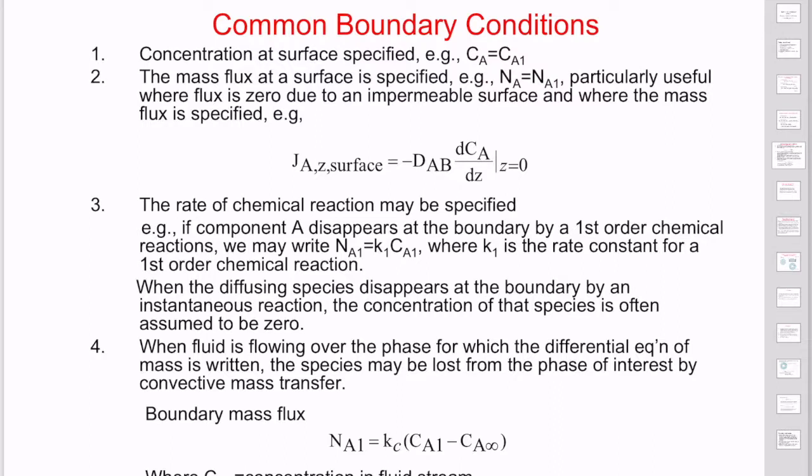These are just some examples of common boundary conditions. For example, the first one is concentration at a surface, where you might know it, it might be a constant. You might know the mass flux at a particular surface. It might be zero, for example, because there's a hard surface there, so mass can't be diffusing across it. You might know the reaction rate, or you might have some way of specifying it. You might also know that the fluid is, some fluid is flowing over another phase, which means there might be convective mass transfer, and we will have ways in order to specify that boundary condition as well.